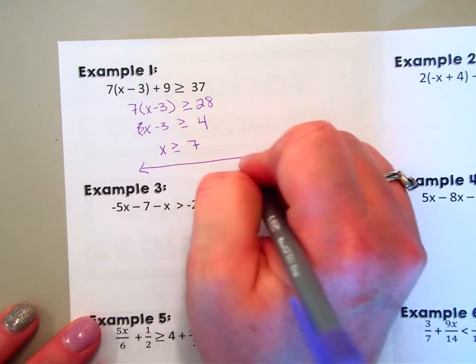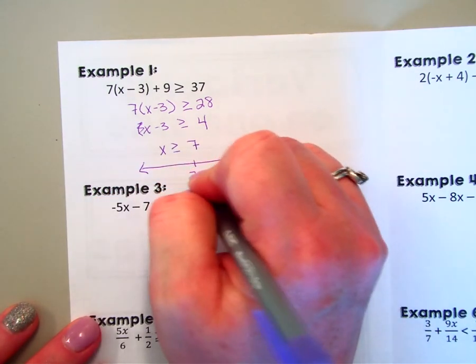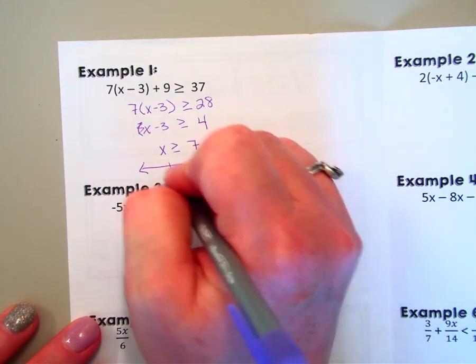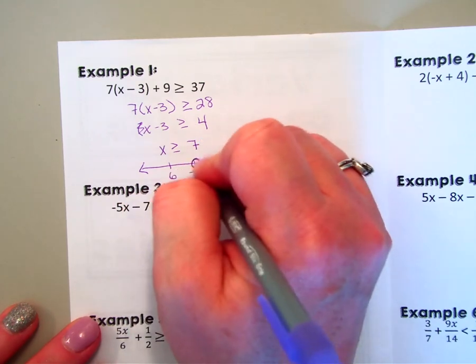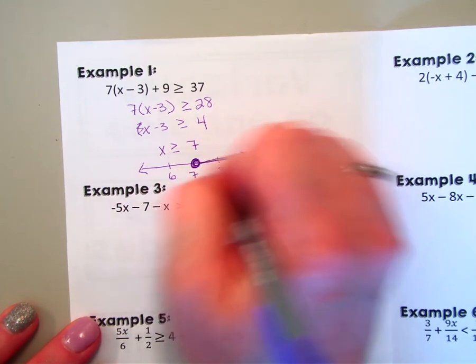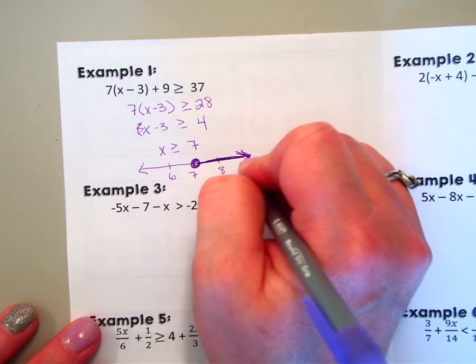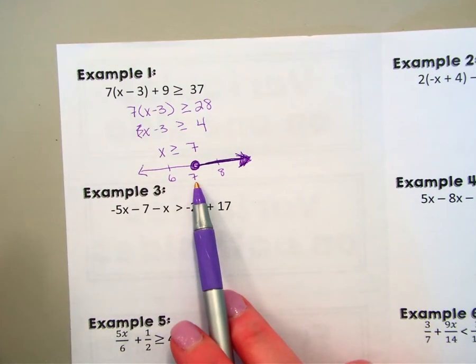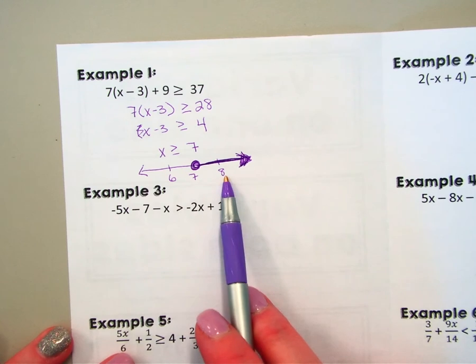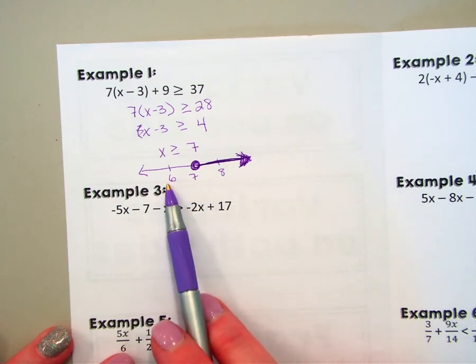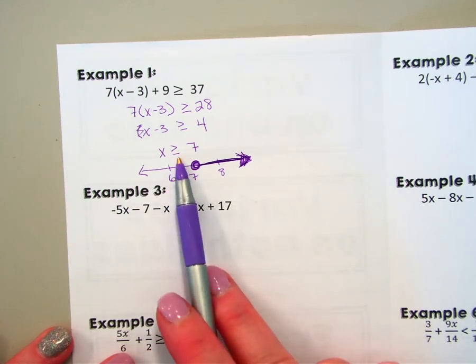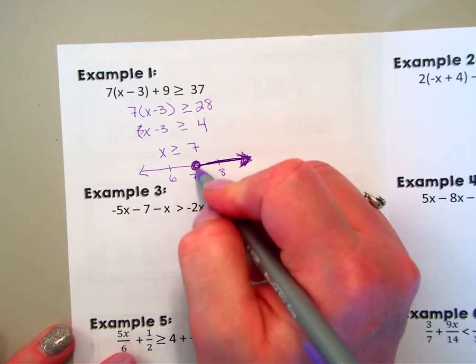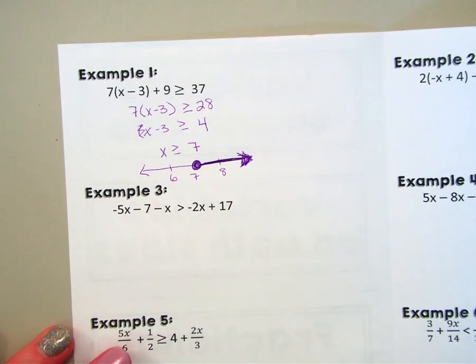So with our inequalities we always draw a little number line to show what our solution represents. Here's my number line, so I always put seven in the middle because that was the answer I got, and then you want to go at least one higher, one lower. Because this had the or equal to, it's a closed circle on the seven. It was greater than, so it's shaded to the right.